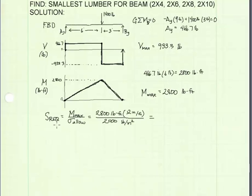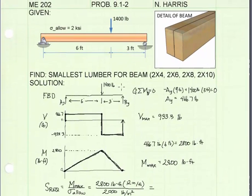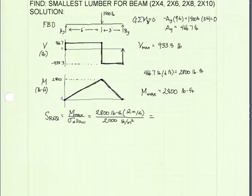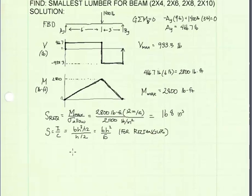The next step is to calculate our required section modulus. That's equal to our max moment divided by allowable normal stress. Our max moment is 2800 pound feet, and we need to convert that to inch pounds. So we're going to multiply it by 12 inches per feet. Our allowable stress was given in the problem. It is 2 KSI, which is equivalent to 2,000 pounds per square inch.